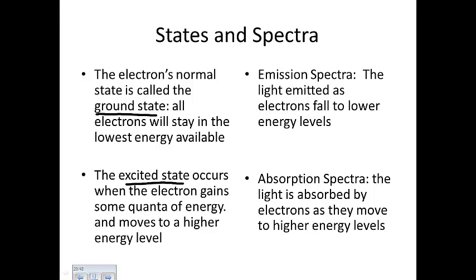Bohr also talks about two different spectra. You have an emission spectrum, where light is being emitted, and an absorption spectrum, where the electrons actually absorb the light. Light is emitted as electrons fall to lower energy levels — so as electrons go from excited back to ground state, they emit light. On the other hand, light is absorbed by electrons as they move to higher energy levels.